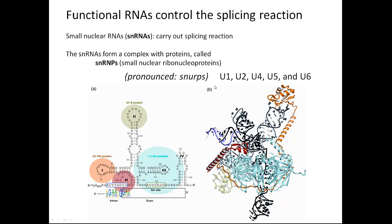There are five different snRNP complexes, called U1, U2, U4, U5, and U6. Shown here is the structure of one of the snRNPs, U1, illustrating that there are four different proteins together with the RNA, which kind of ties them all together.